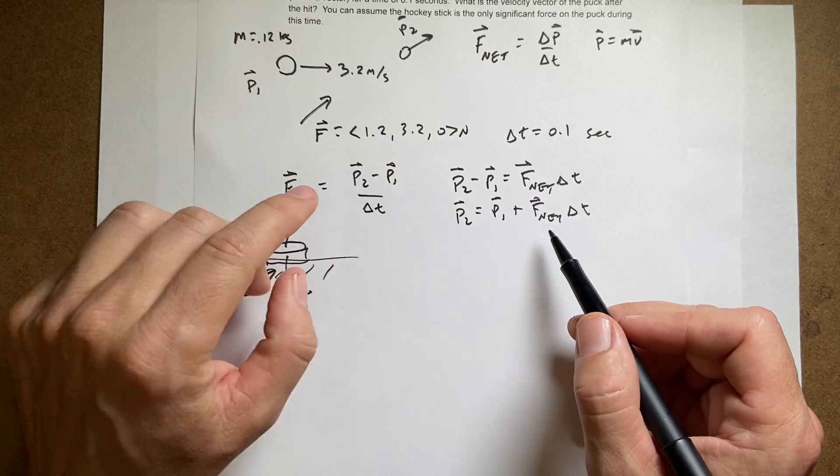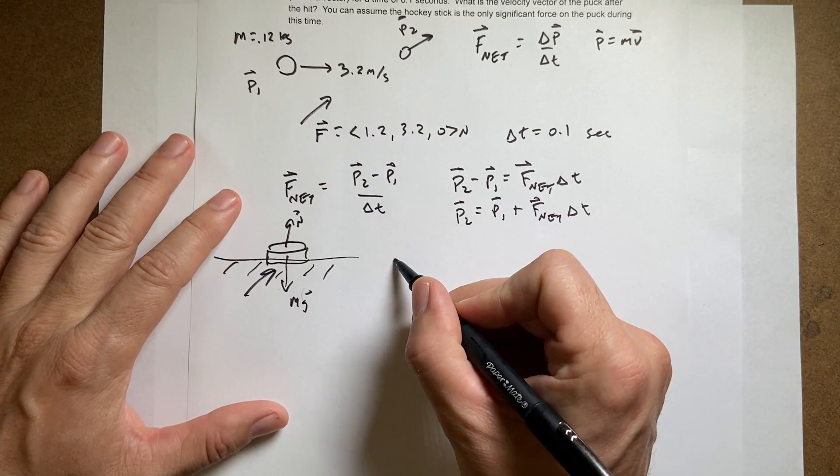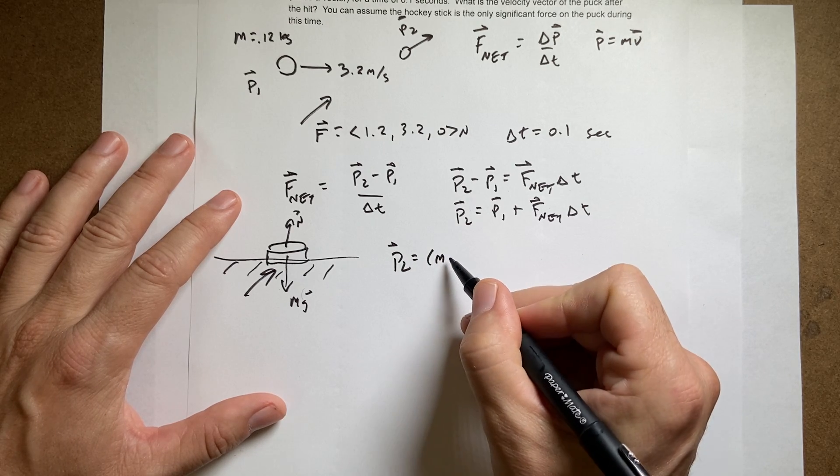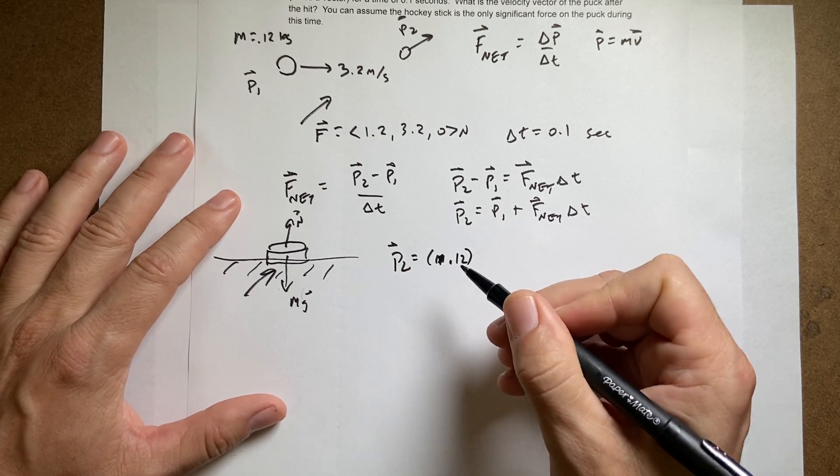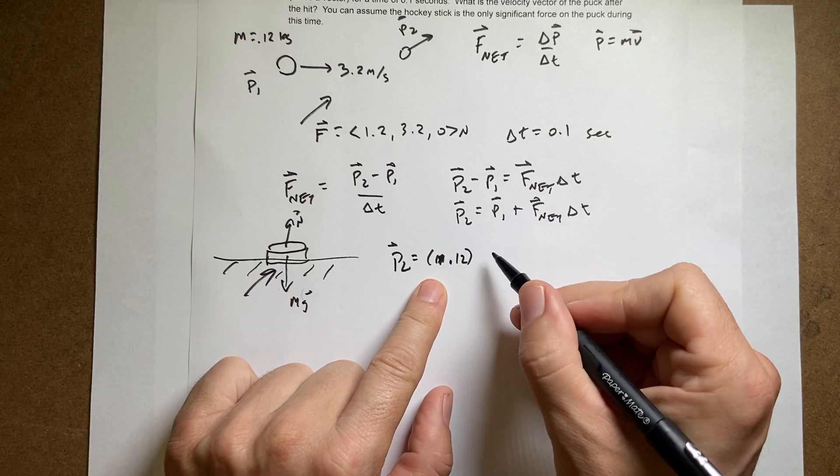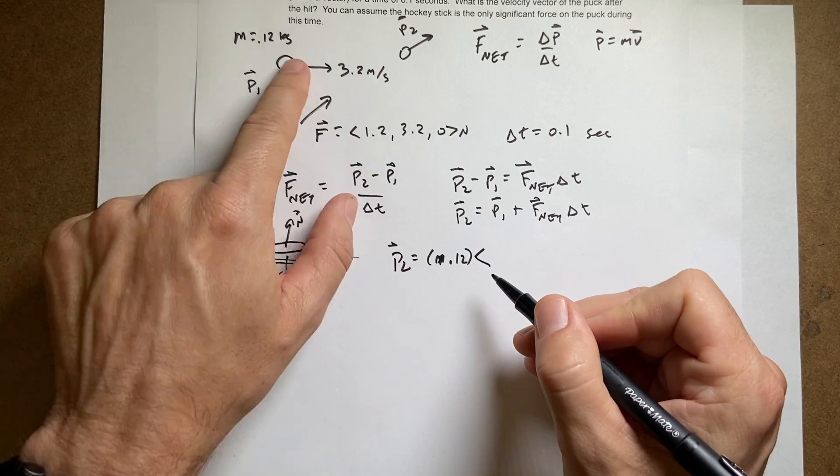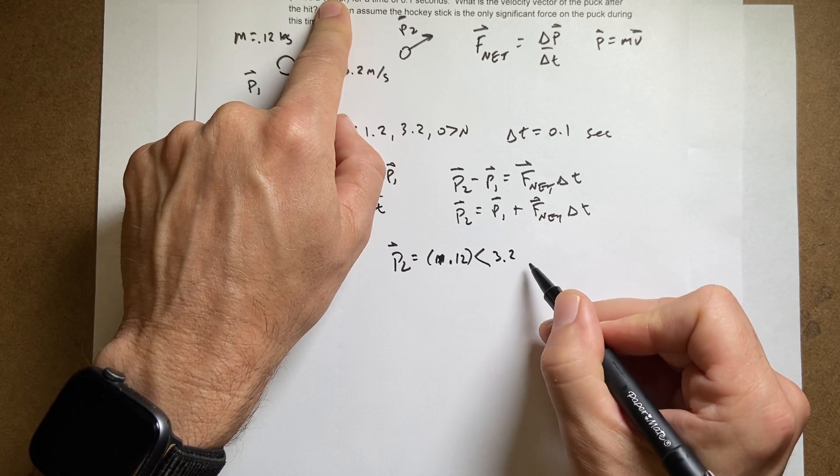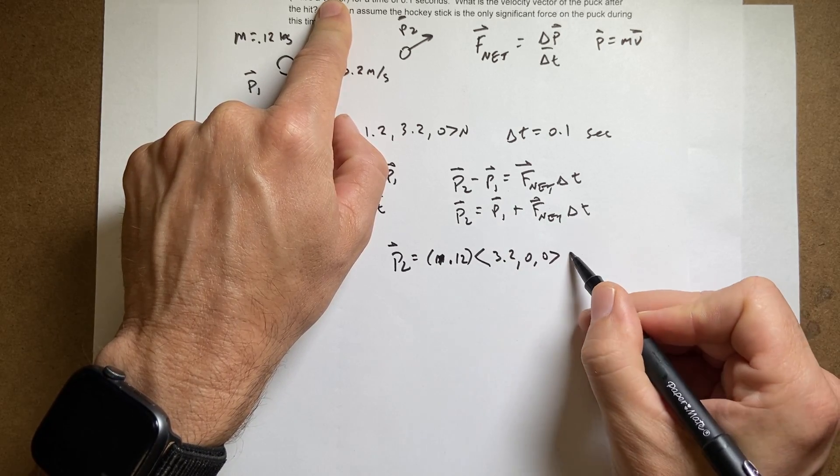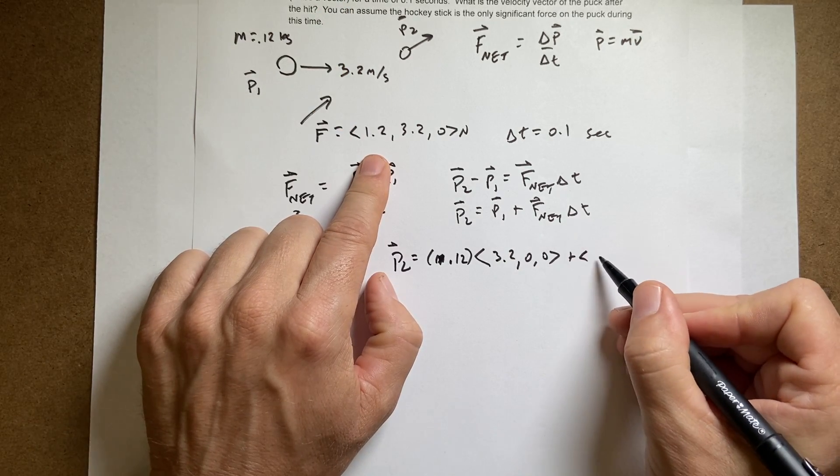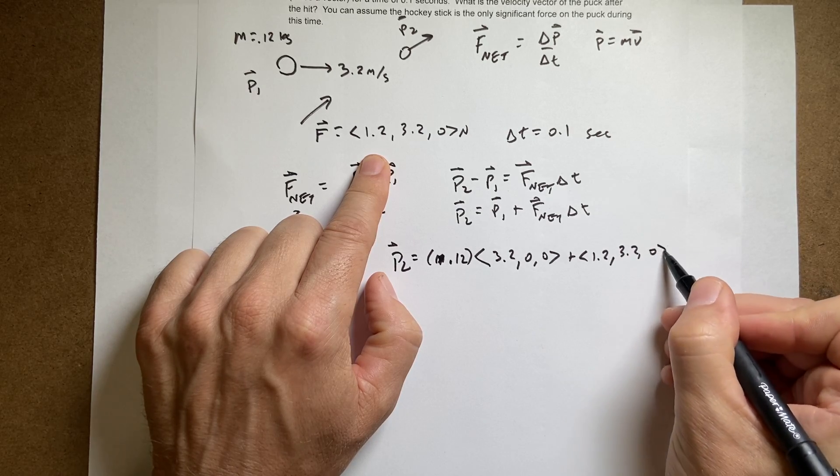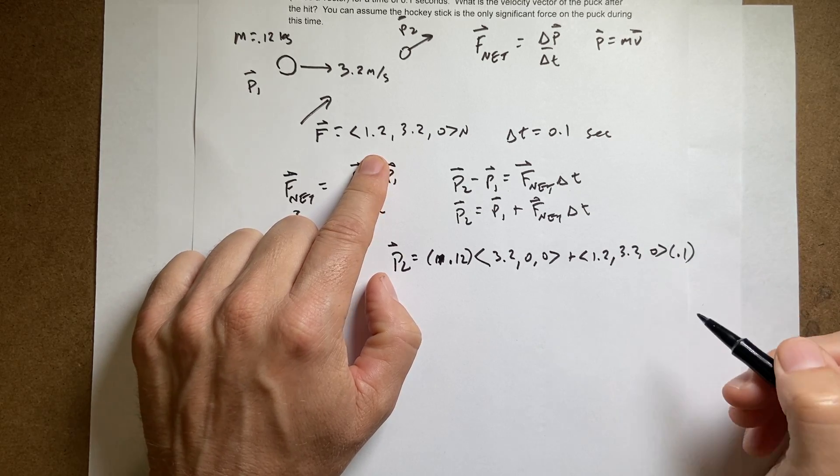So I need to write this as P1 and then I can find P2. I'll write it out. P2 is going to be P1, which is the mass - I'll write it as 0.12 kilograms. I'm going to leave off the units just for simplicity. Times the vector, I need this as a vector. So it's in the x direction: 3.2 meters per second, zero, zero, plus 1.2, 3.2, zero times 0.1.